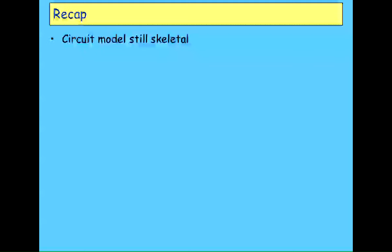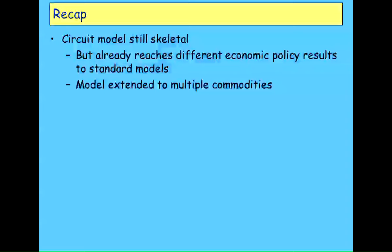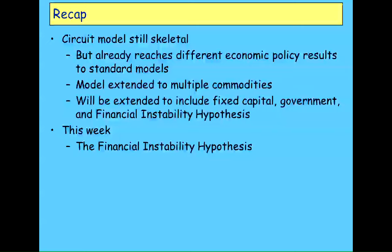A recap of what we've got so far. I showed you the circuit model last week. It's still skeletal, but I showed you that you can actually reach very different conclusions about economic policy from that model, even the simple stage I showed you last week. I've extended it to include multiple commodities, input-output dynamics and so on. Next week I'll show you how to extend it to include fixed capital and model the financial instability hypothesis using it. This week I intend going through the financial instability hypothesis and showing where it came from.